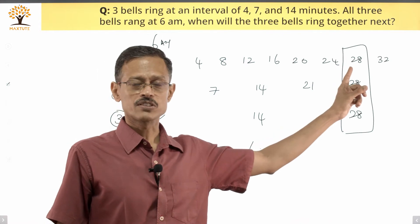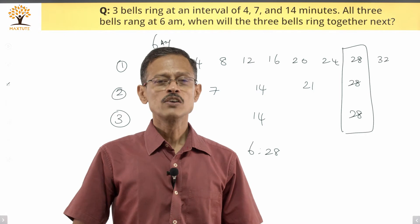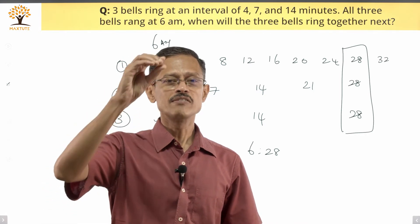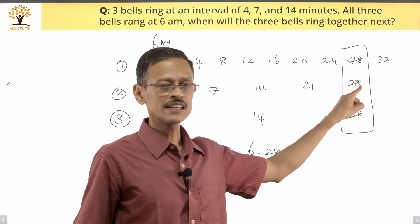We'll learn the concept once more and then apply it with the steps in the next slide. So first bell rings at multiples of four, second one rings at multiples of seven, third one rings at multiples of 14. So when will all of them ring together?